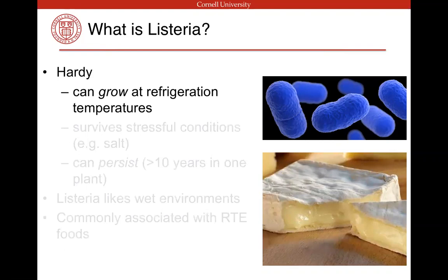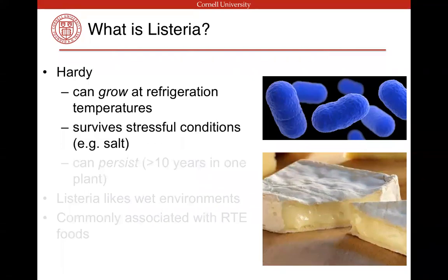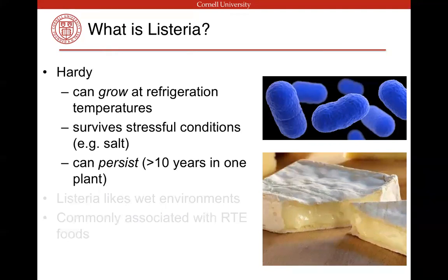Listeria is different from other foodborne pathogens in that it can still grow, even at slower rates, at refrigeration temperatures. This becomes a problem if you've got cantaloupe or some soft cheese with a little bit of contamination — if you put it in your fridge for a week, Listeria can grow over that time period and become a problem, even a lethal dose. It can also survive stressful conditions and persist — Listeria is known to survive weeks, months, and even years in food facilities, continually growing and recontaminating food.